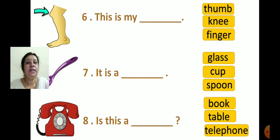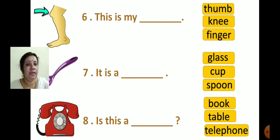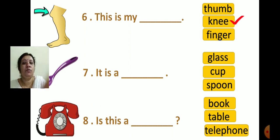Now see the sixth one. See the picture and read the line: 'This is my dash.' The options are Thumb, Knee, and Finger. We have learned this in the parts of our body. Which part is this? Yes — Knee. So the correct option is knee.